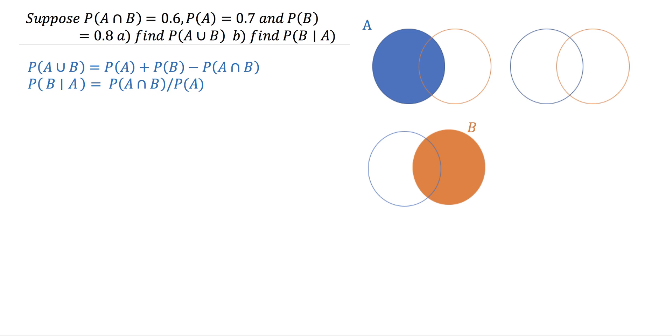Suppose the probability of A intersect B equals 0.6, the probability of A equals 0.7, and the probability of B equals 0.8. Part A, find the probability of A union B. Part B, find the probability of B given A.